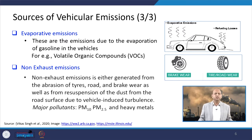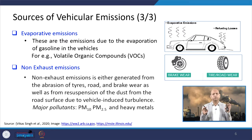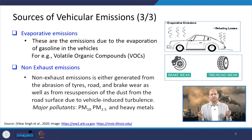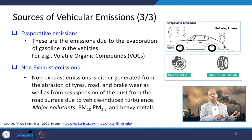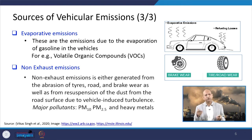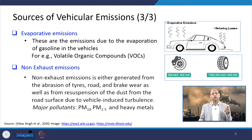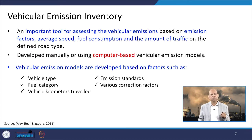When we talk about evaporative emissions, mostly volatile organic compounds — those hydrocarbons — get emitted from fuel leakage etc. Non-exhaust emissions include PM10, PM2.5, and heavy metals from brake wear or tires and roads. These are the predominant air pollutants emitted from non-exhaust emission sources of the vehicular category.